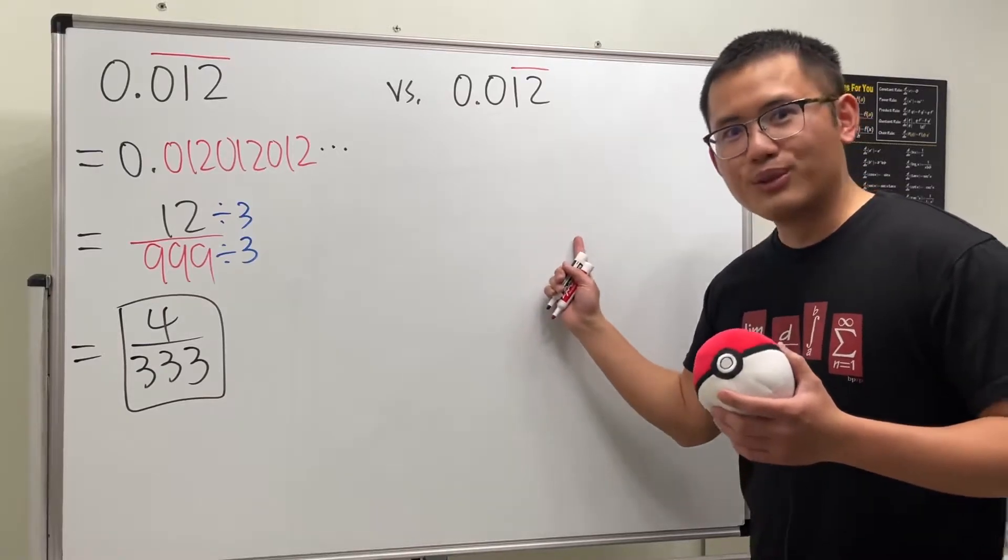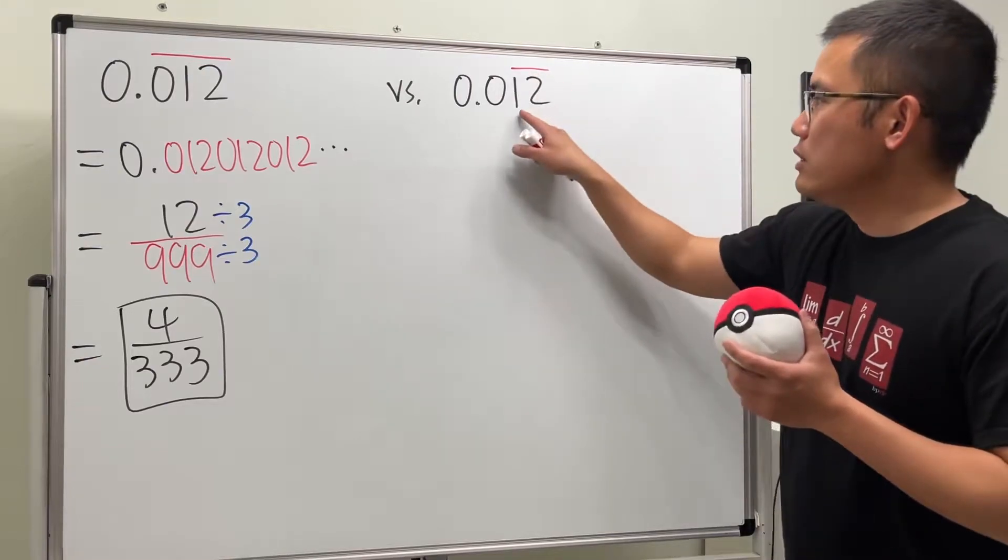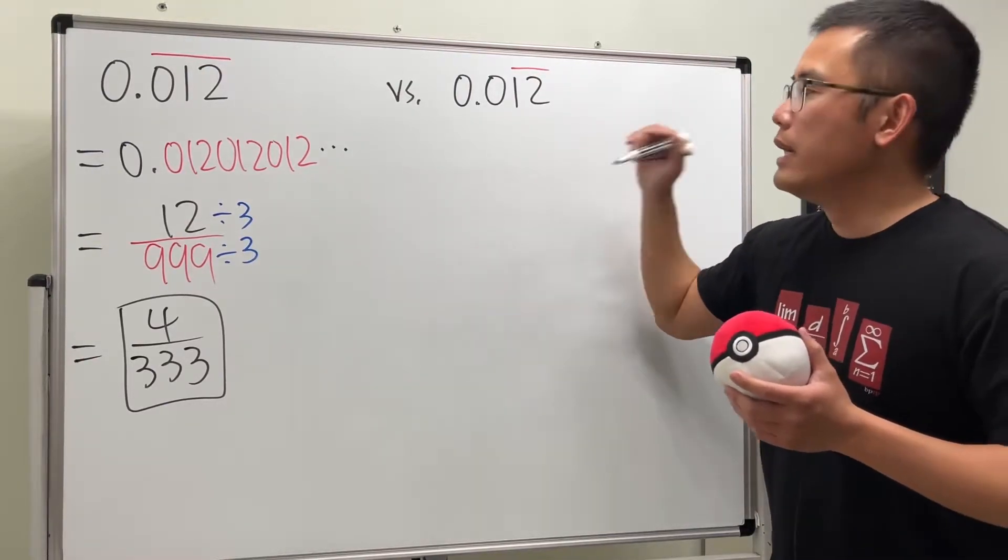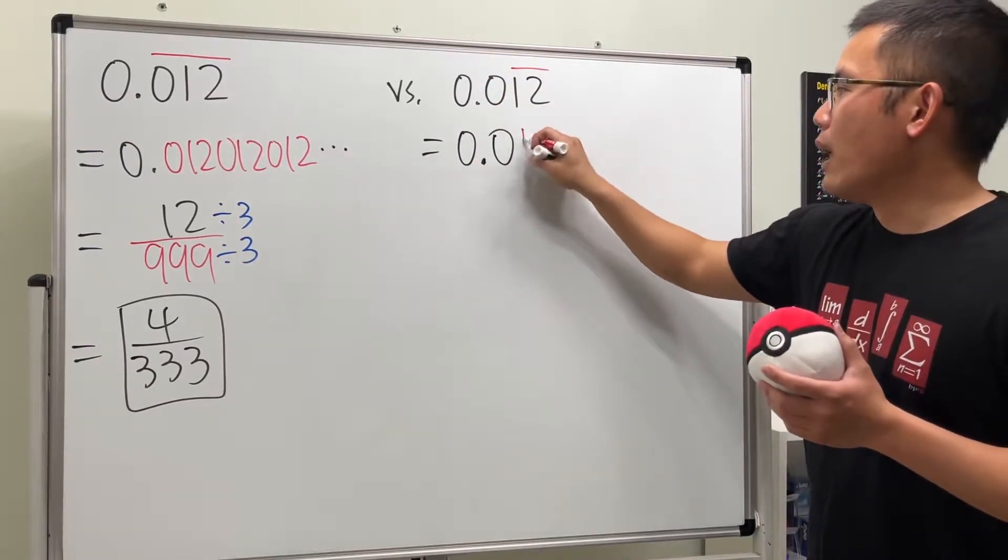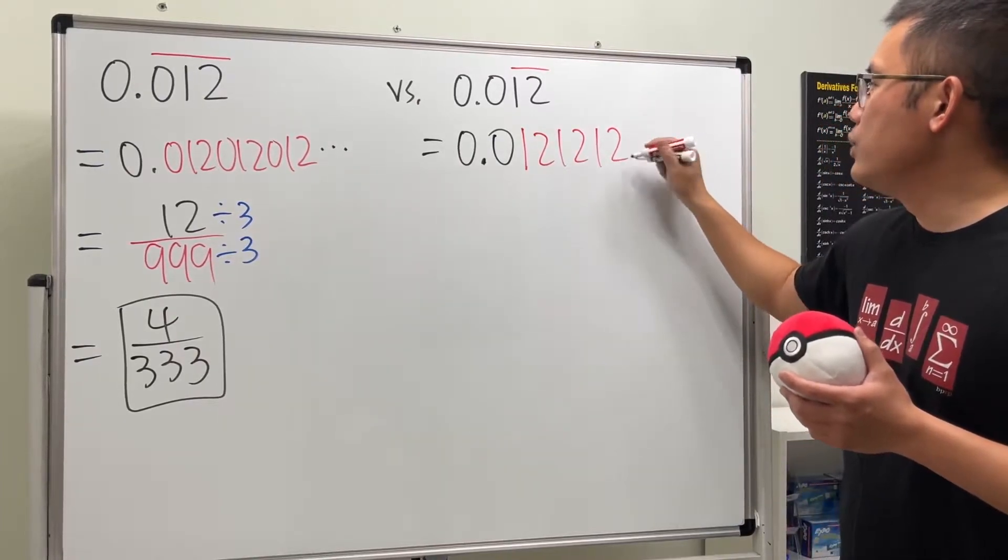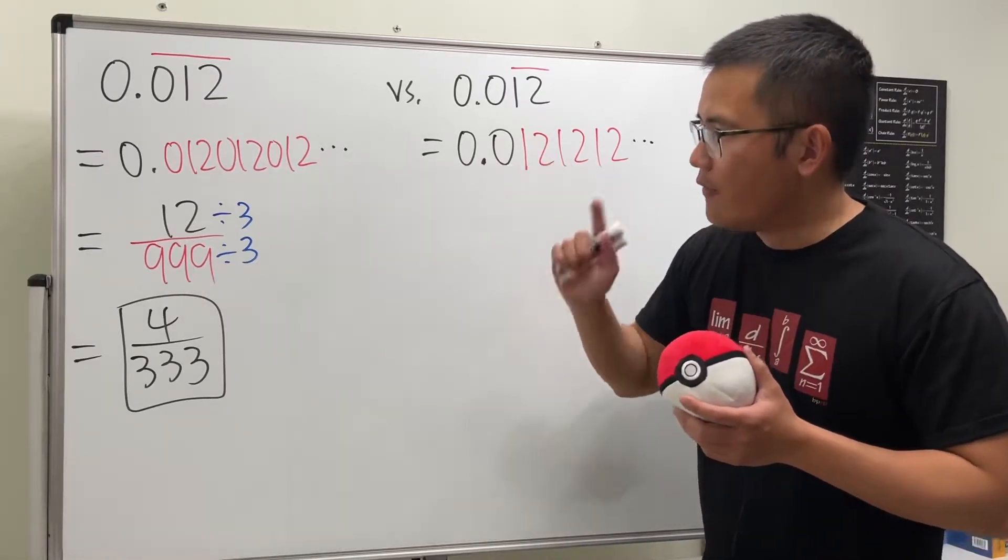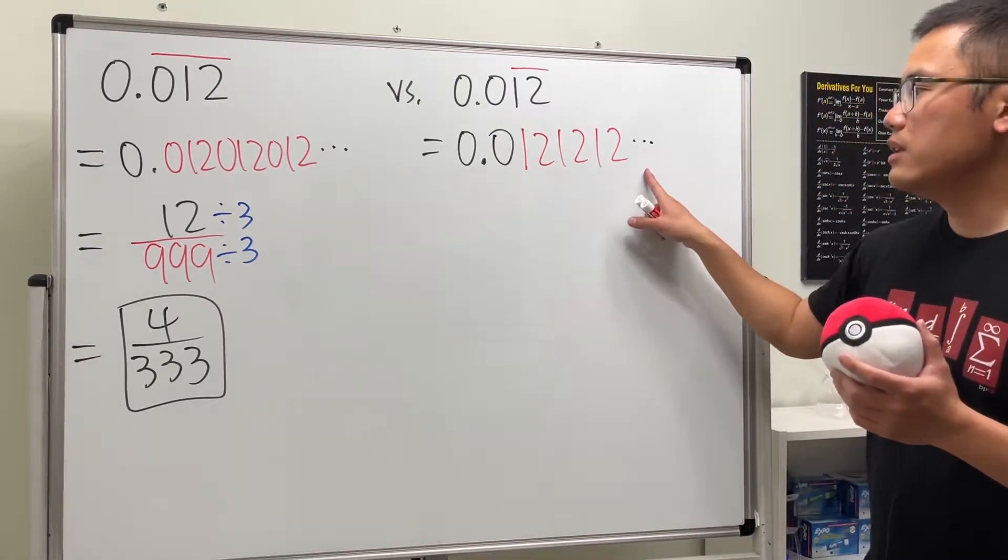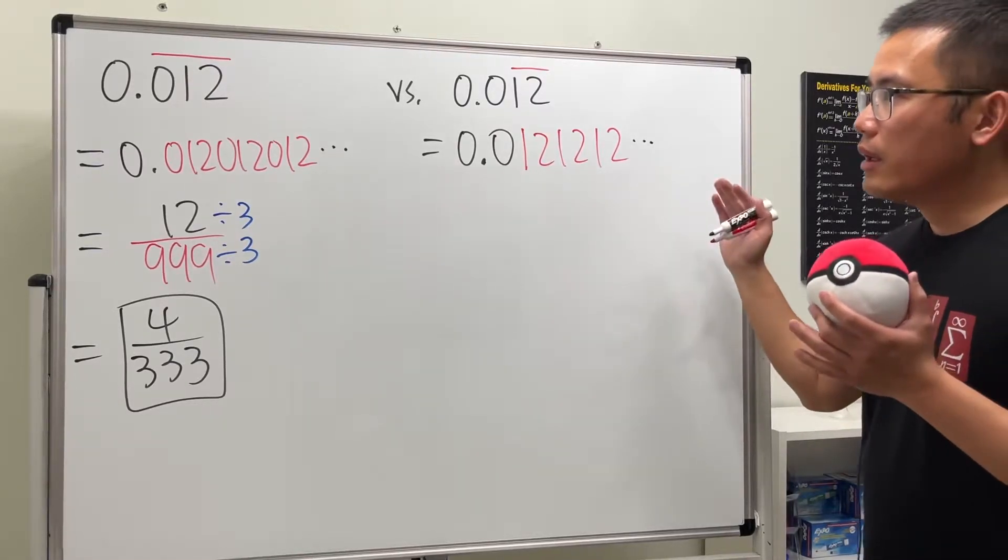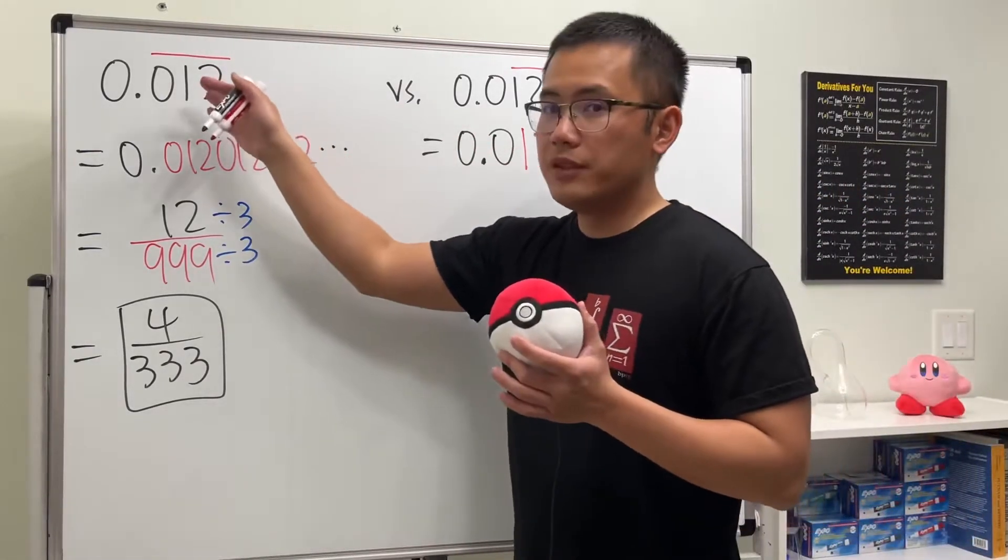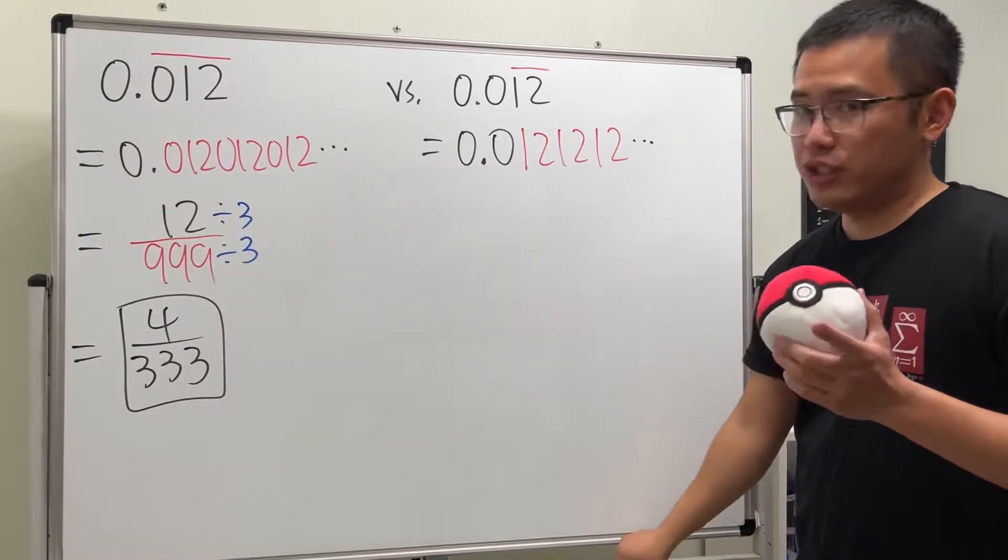For that question, we still have to do this one, though. This time, the bar is only for the 1 and 2. So, this means we have 0, 0, and then the 1, 2, 1, 2, 1, 2 will be repeating like so. So, this and that are very different numbers. How can we get a fraction version of this? Well, the beauty of this is that the bar is right after the decimal point.